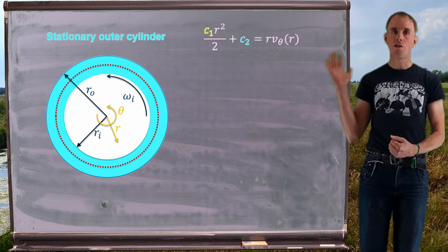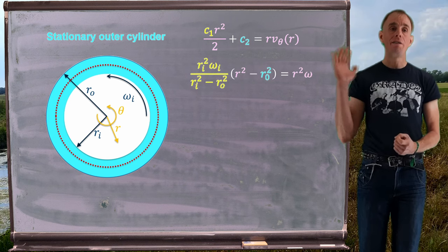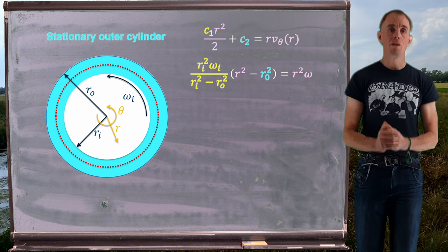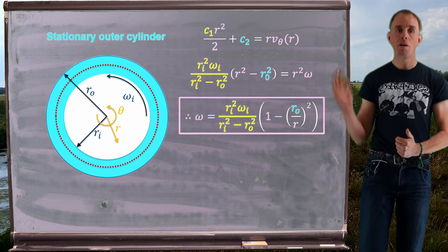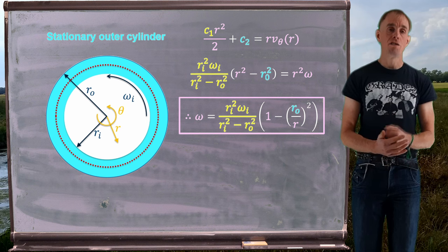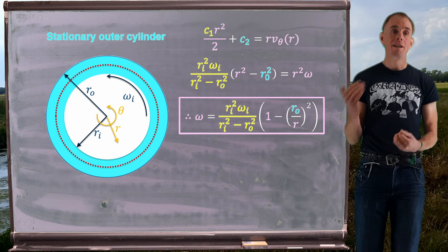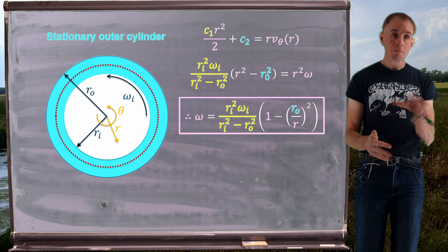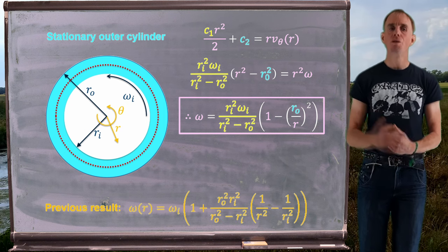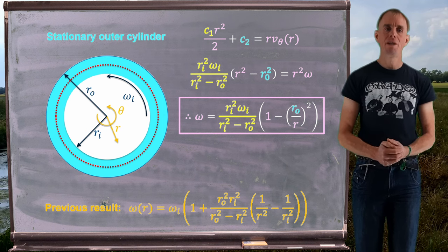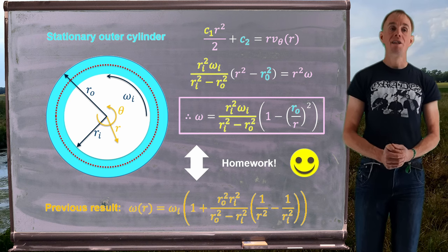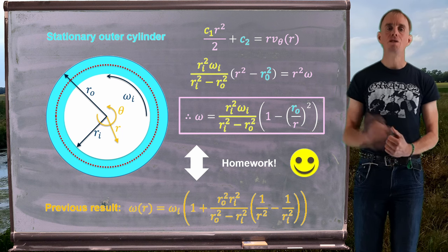With integration constants c_1 and c_2 evaluated, we can write our velocity profile: the left-hand side has terms involving r_i and the right-hand side has r² omega. Rearranging to write omega as a function of r, omega is expressed in terms of r_i, omega_i, r_o — and notably no viscosity. As before, the velocity profile does not depend on the viscosity of the system because this is a wall-driven flow. The eagle-eyed will notice this expression is algebraically different from the previous result in the last part of the lesson, however they are equivalent — plotting both gives overlapping curves. Part of your homework is to convince yourself these two solutions are the same.